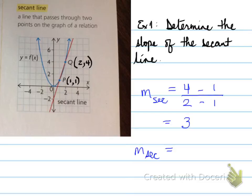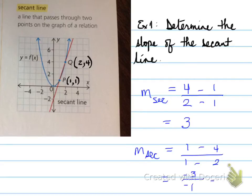Now let's say we had chosen the points in a different order: (1, 1) first going upwards, then (2, 4) going upwards, then three lines. That yields negative 3 over negative 1, which, lo and behold, turns out to be 3. So it doesn't matter which order you use - write the points going upwards and draw 3 lines to separate them.